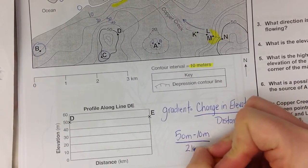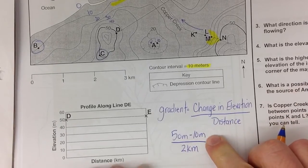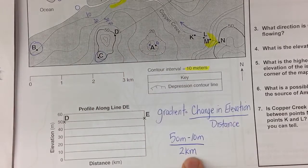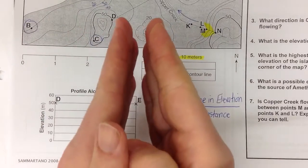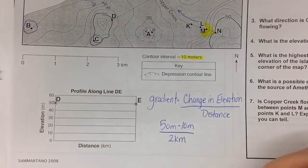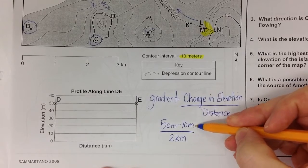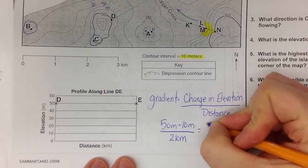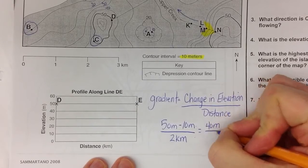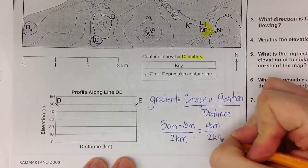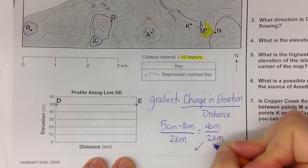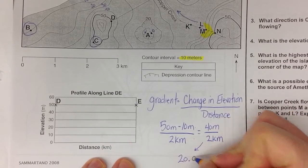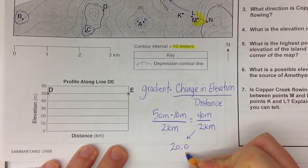So linear distance between them is two kilometers. The numerator is the vertical distance between the points. The distance is going to be the linear distance between them. So this is the vertical elevation divided by the linear distance between them. So that's 40 meters divided by two kilometers. Now, simple division.